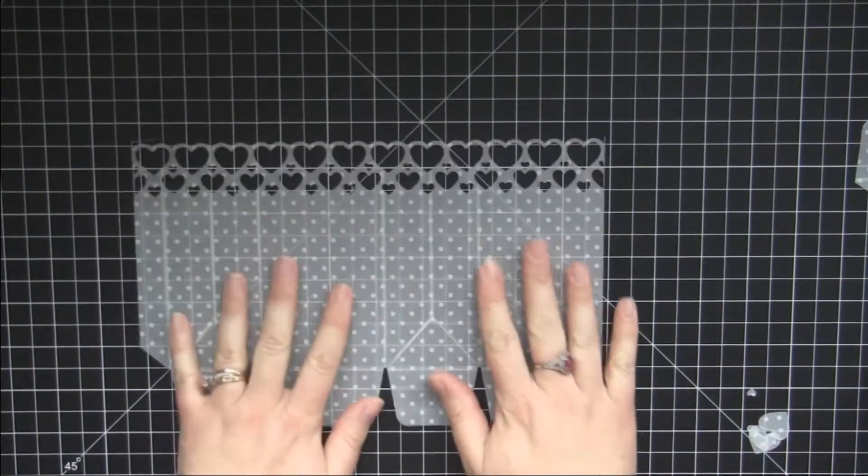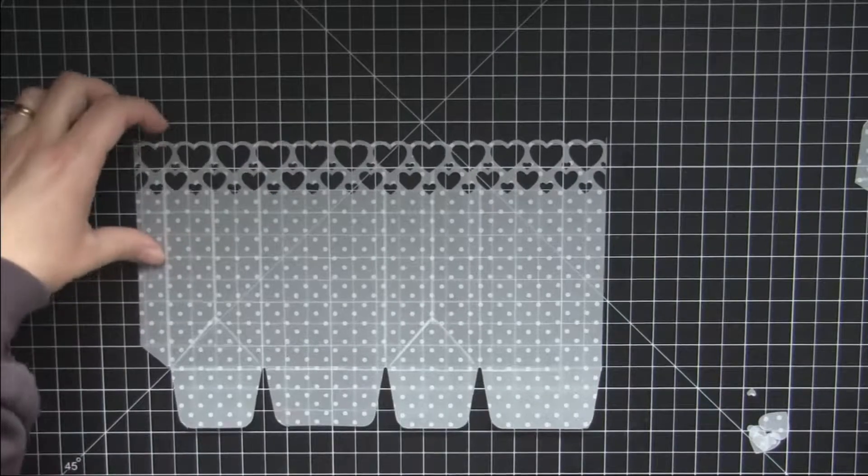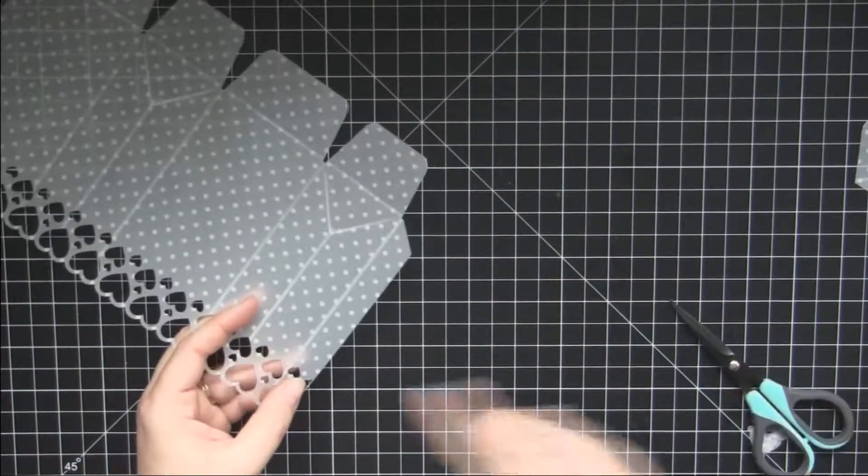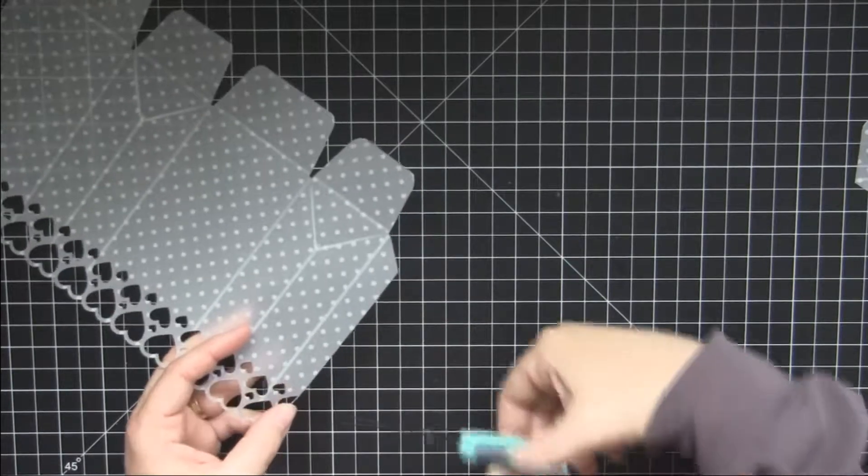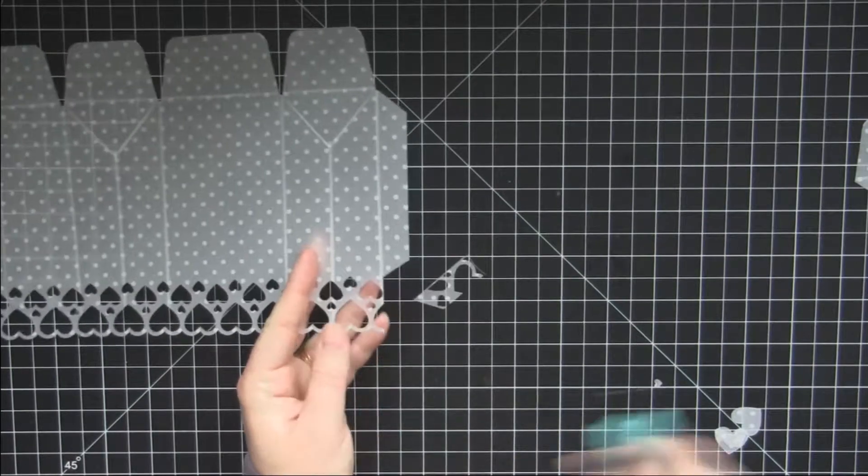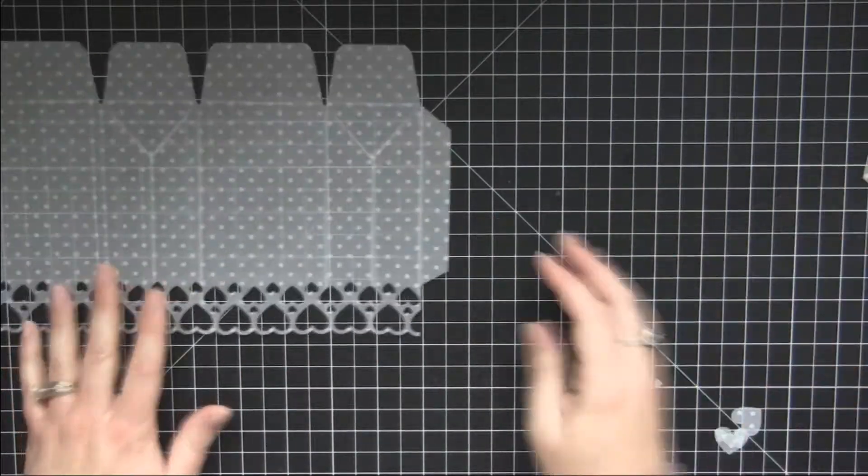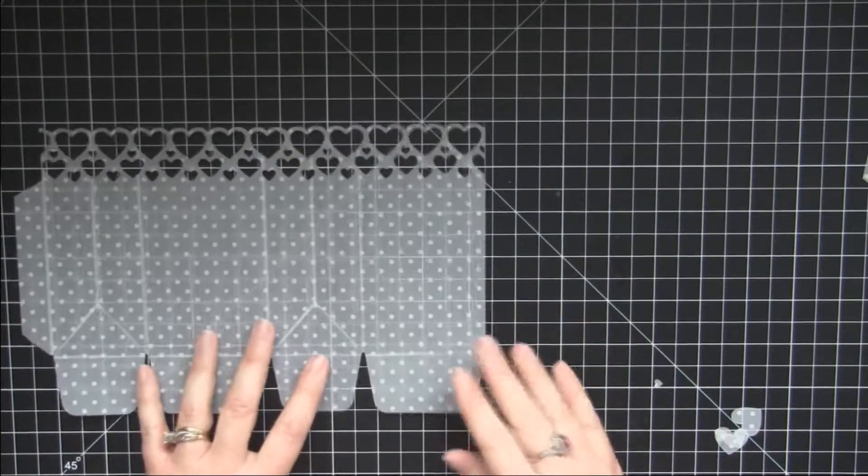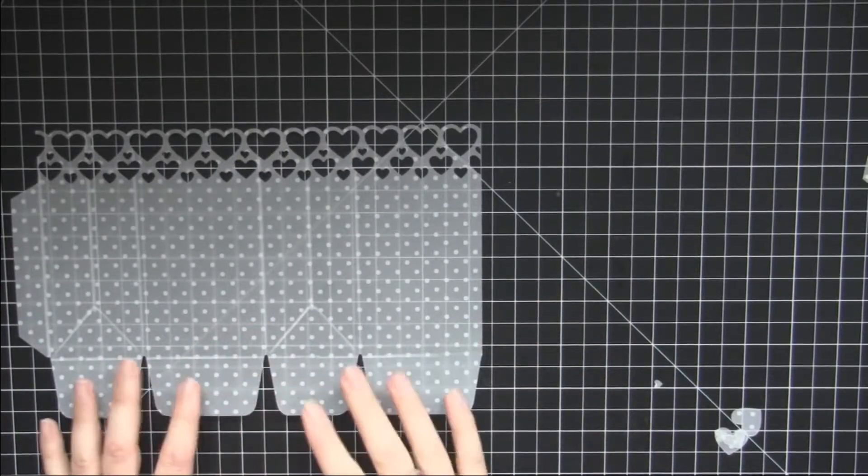You could save those and put them in a shaker card. But for now, so this is our bag now. I'm actually going to, this is the side flap that adheres the bag together. So I'm actually going to cut it off like that. Okay, now what we can do is we can embellish our bag right now.